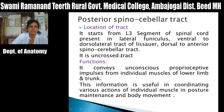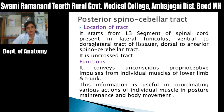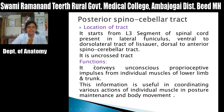This is an uncrossed tract because in the cerebellum, the body is represented ipsilaterally — right side of the body is represented in the right side of the cerebellum. In the cerebral cortex it is opposite. Function: it conveys unconscious proprioceptive impulses from individual muscles of the lower limb and trunk. This information is useful in coordinating various actions of individual muscles in posture maintenance and body movements.